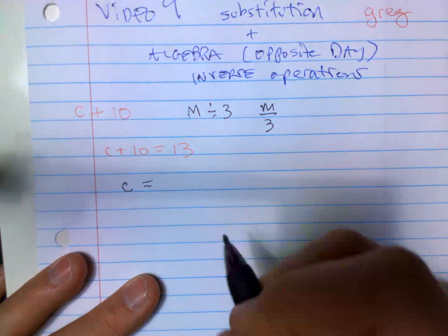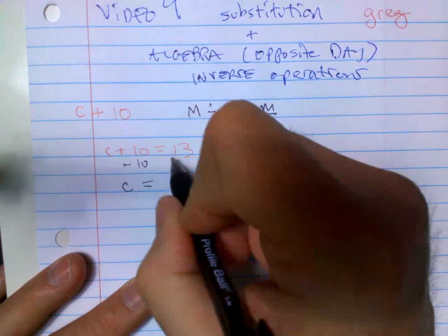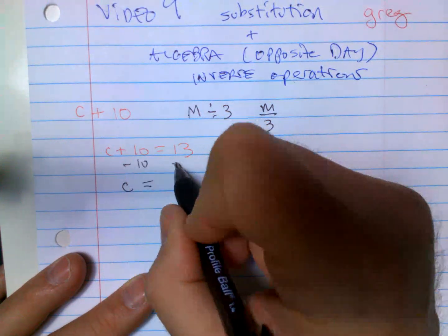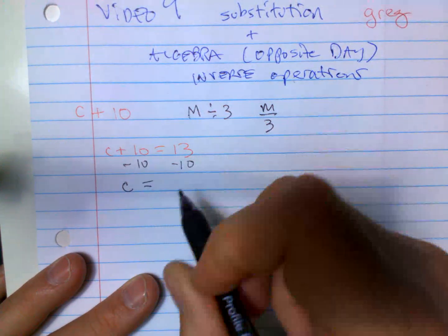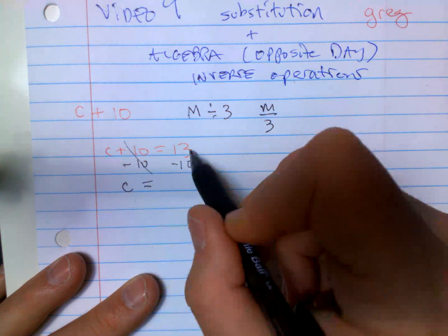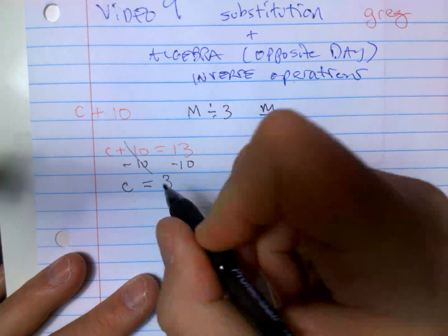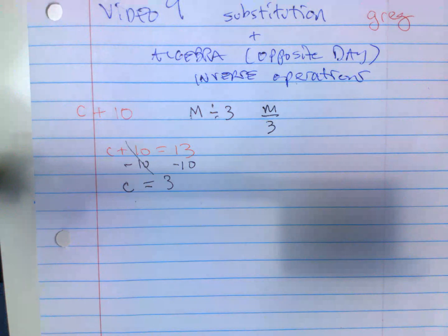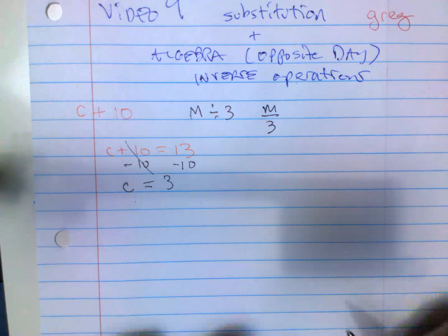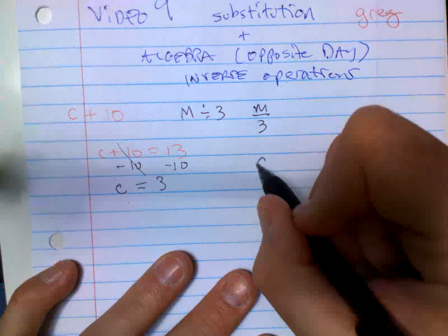So you would do minus 10. Whatever you do to one side, you've got to do the other side. This disappears and we've got C by itself — 13 minus 10. There's three cats! But they could also do this — they could say C plus 10, what is the answer if C equals 28?